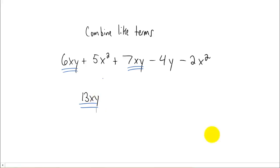Do we have any other like terms? Well yeah, the 5x squared and the negative 2x squared. Those have the same variable with the same power. So we're allowed to combine them. 5 minus 2 is just 3. So we're going to get a plus 3x squared.